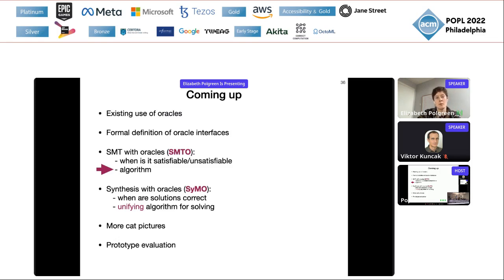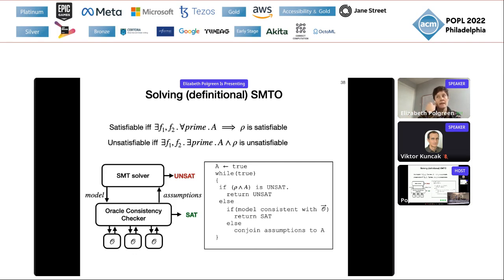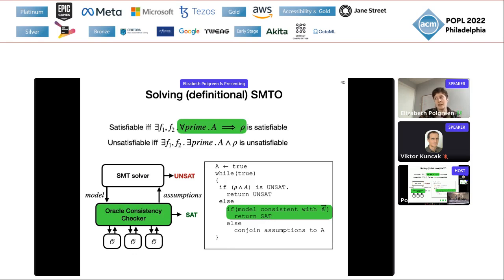Solving SMTO problems is quite straightforward once you have definitional SMTO. We have a simple loop: first, we ask a standard SMT solver if the problem is unsat — if so, return unsat. If it's sat, we get a model. We check whether that model is consistent with the oracles — for every oracle function symbol that appears in the model, we check whether it would be consistent with the actual underlying oracles. If it is consistent, return sat. If not, we add these assumptions back to A and repeat the loop.